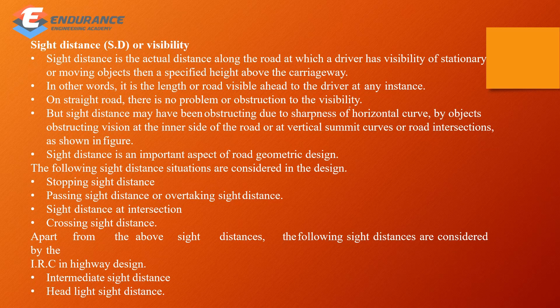Side distance is the actual distance along the road at which a driver has visibility of a stationary or moving object at a specified height above the carriageway. We have to move on the roadway with proper eyesight. If you want to drive a vehicle on a straight road, you will need to have visibility. That is the sight distance.